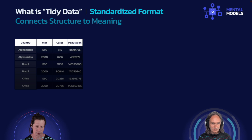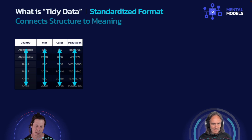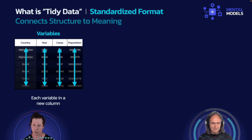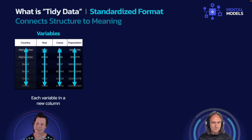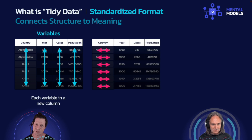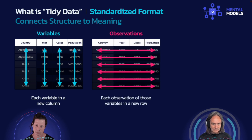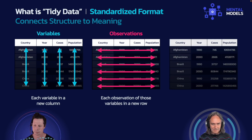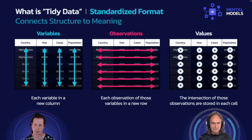This data is just a simple little data set that has country, year, cases, and population. What it means for a data set to be tidy — and Tableau really prefers tidy data sets when you can get them — is that all of the variables, the things that can vary in the data, they're all stored in their own column. Every variable has its own column. What that doesn't mean is that one thing that varies is spread across multiple columns, or many things that vary are in a single column — that's not tidy. The variables are each stored in columns, the observations of those variables each get their own new row, and the observations themselves are in the cell at the intersection of those rows and columns.